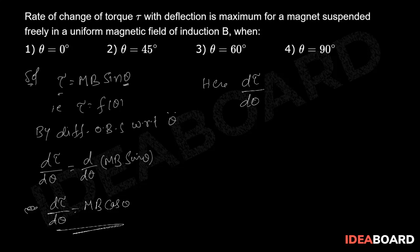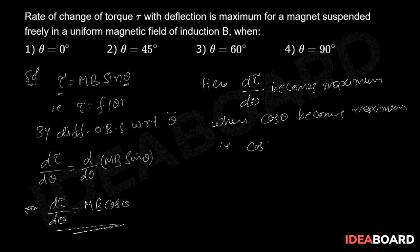becomes maximum when cos θ equals 1. Therefore, the value of θ must be zero degrees. Therefore, the correct option is the first one.